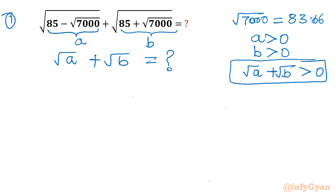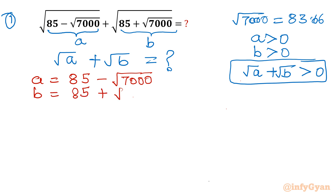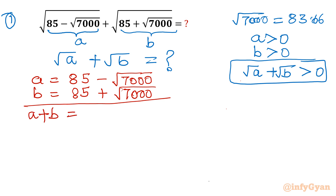Let's write the a and b values separately. So a is equal to 85 minus square root 7000, and b is 85 plus square root 7000. Adding both gives a plus b equal to 85 plus 85, which is 170. The square root 7000 terms cancel out. Now I will take the product a times b, as that will also be required.